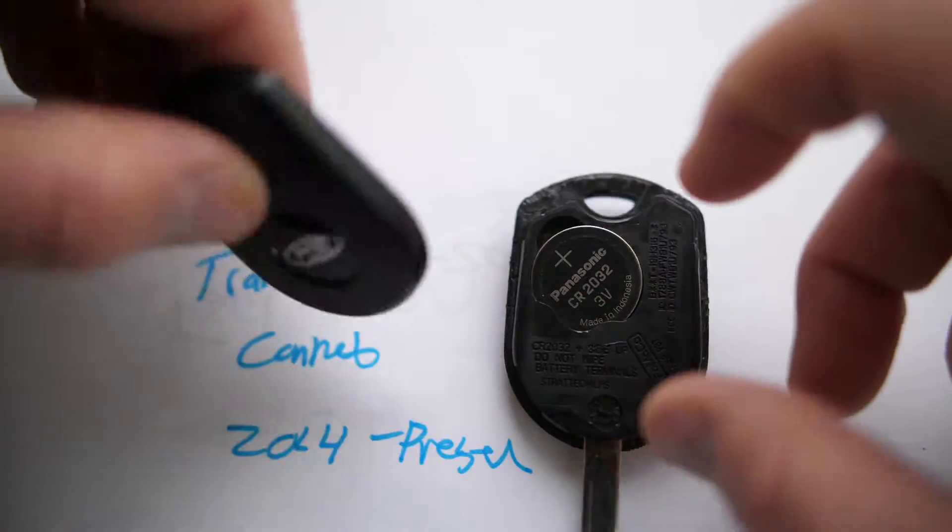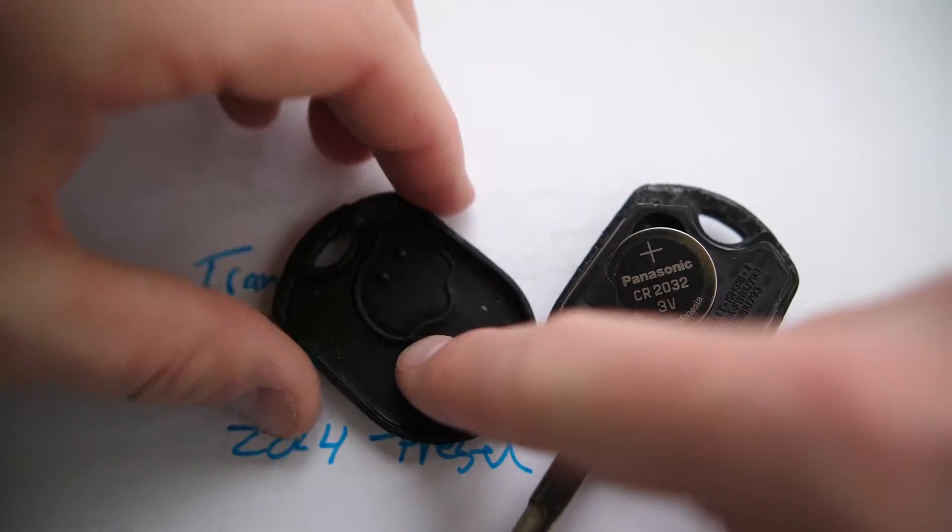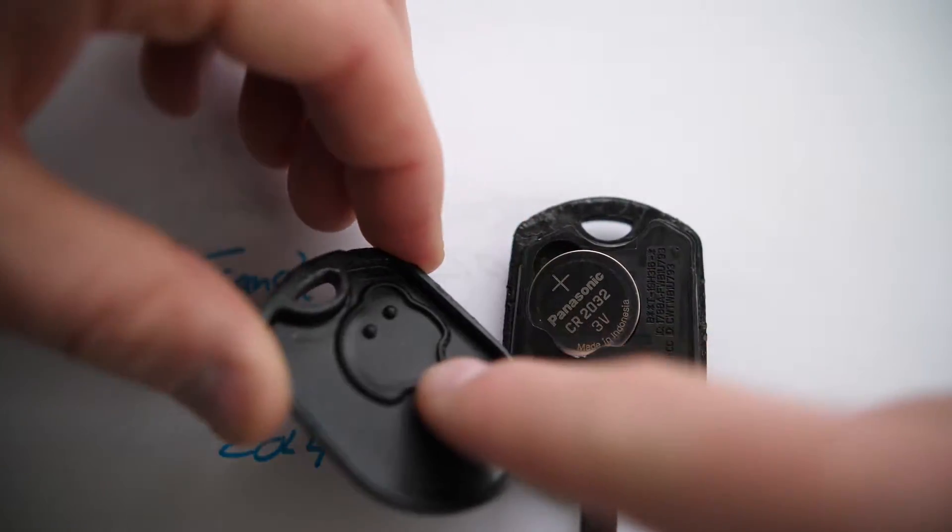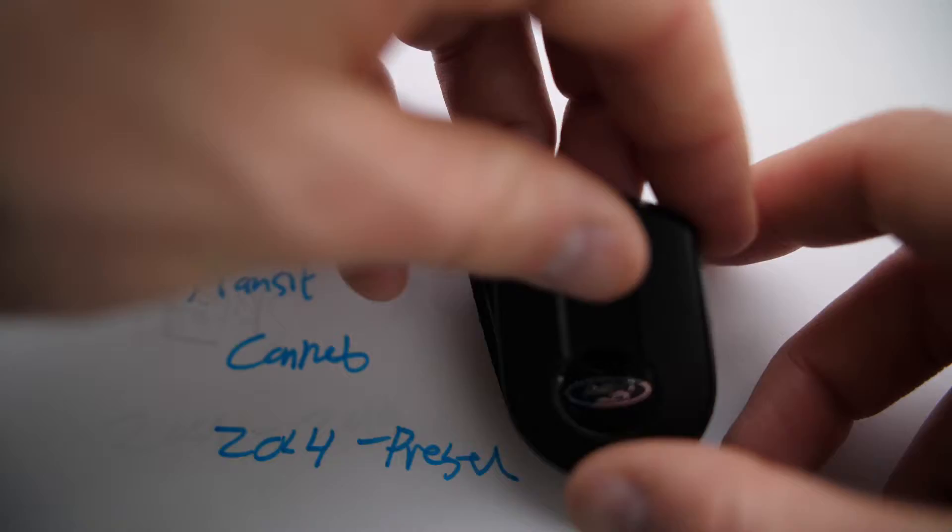Kind of gives a little bit of a bounce. And there's a rubber piece that may fall off here. Just make sure that this little circle here lines up with covering the coin battery there.